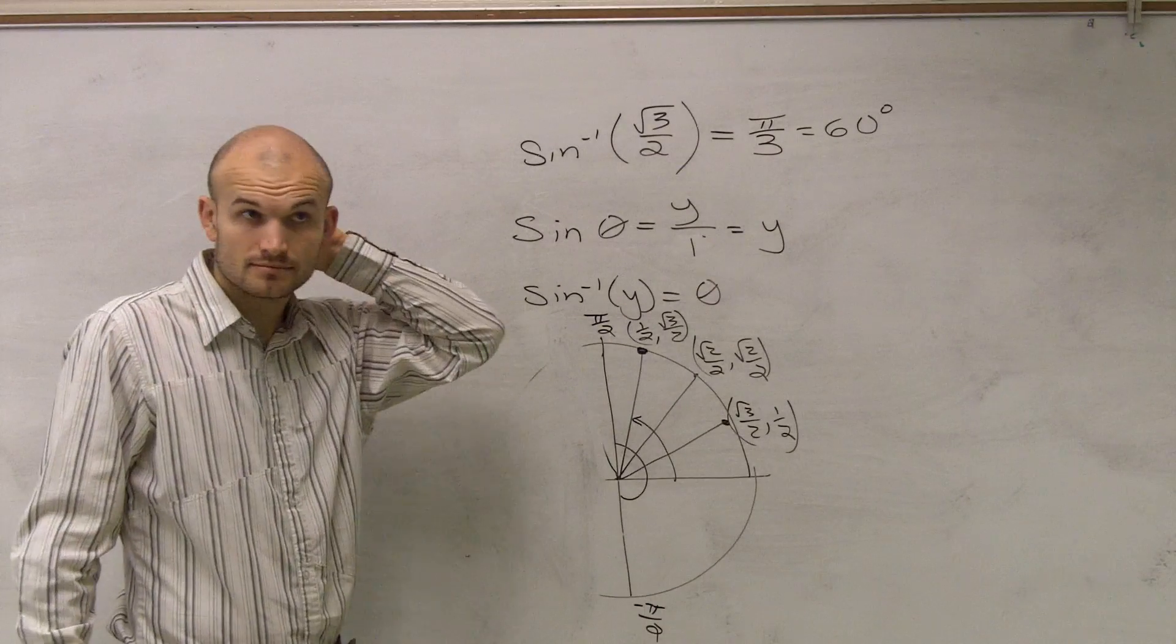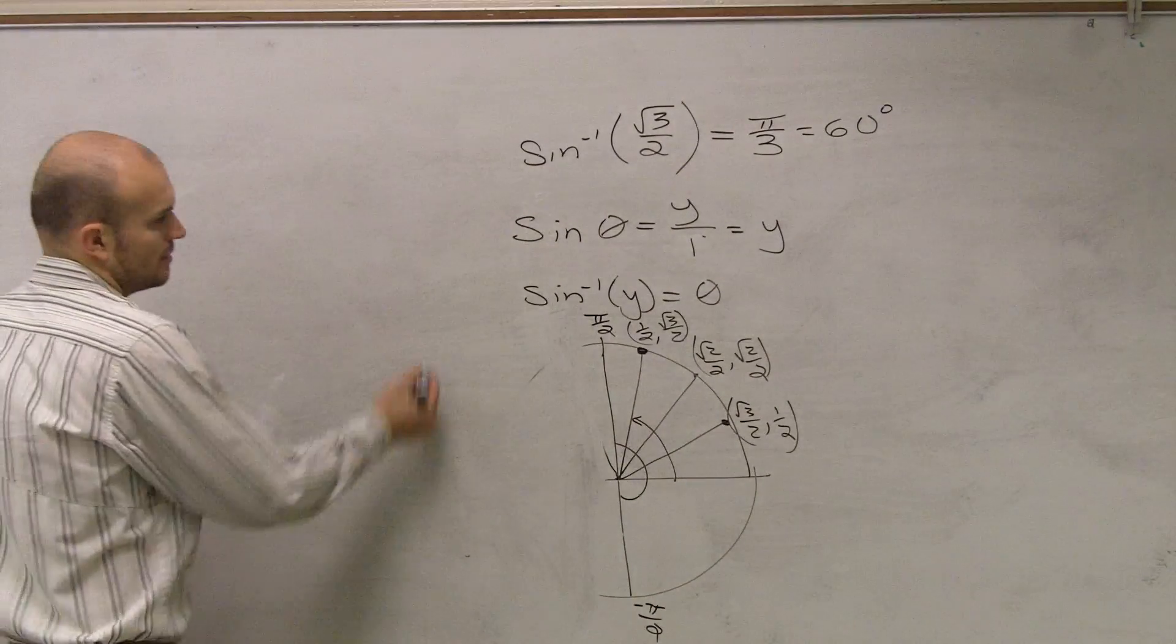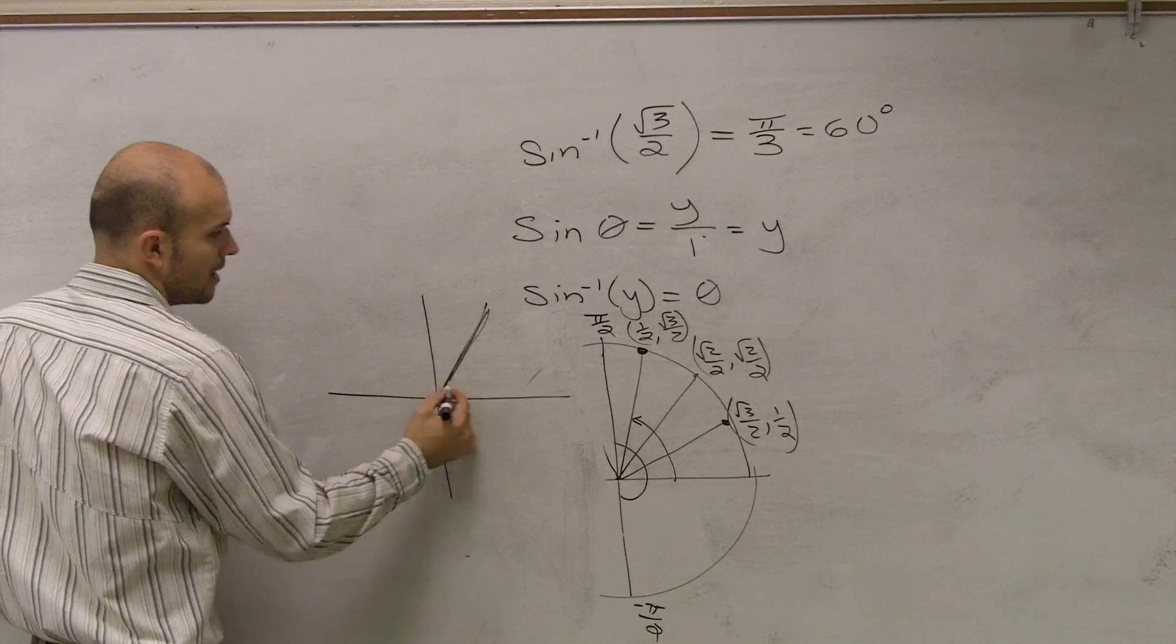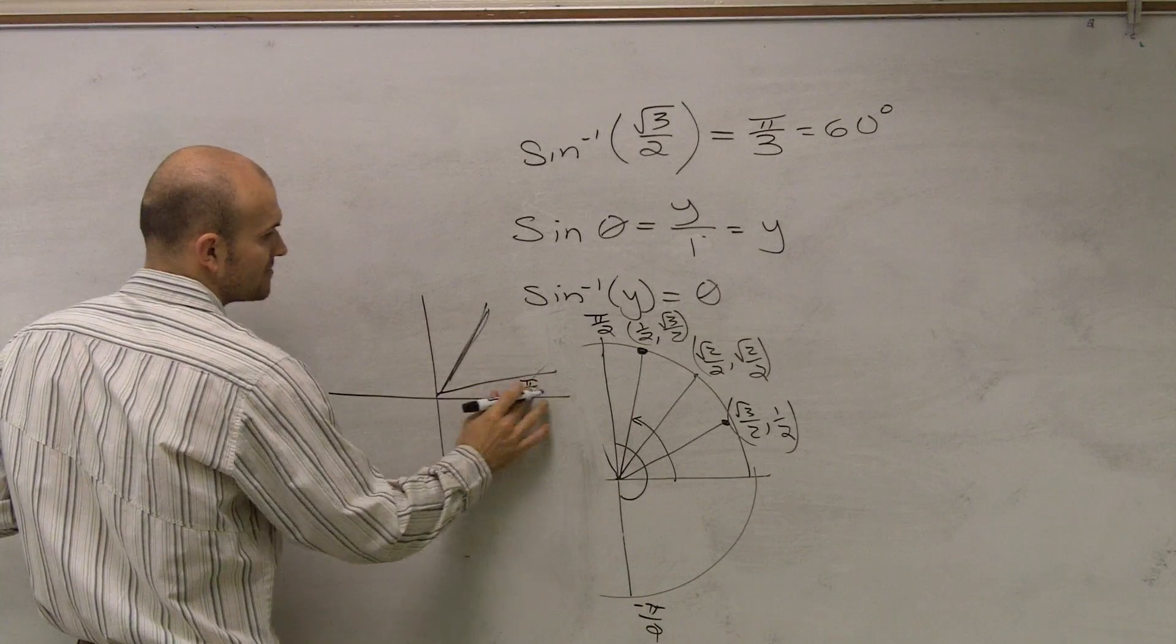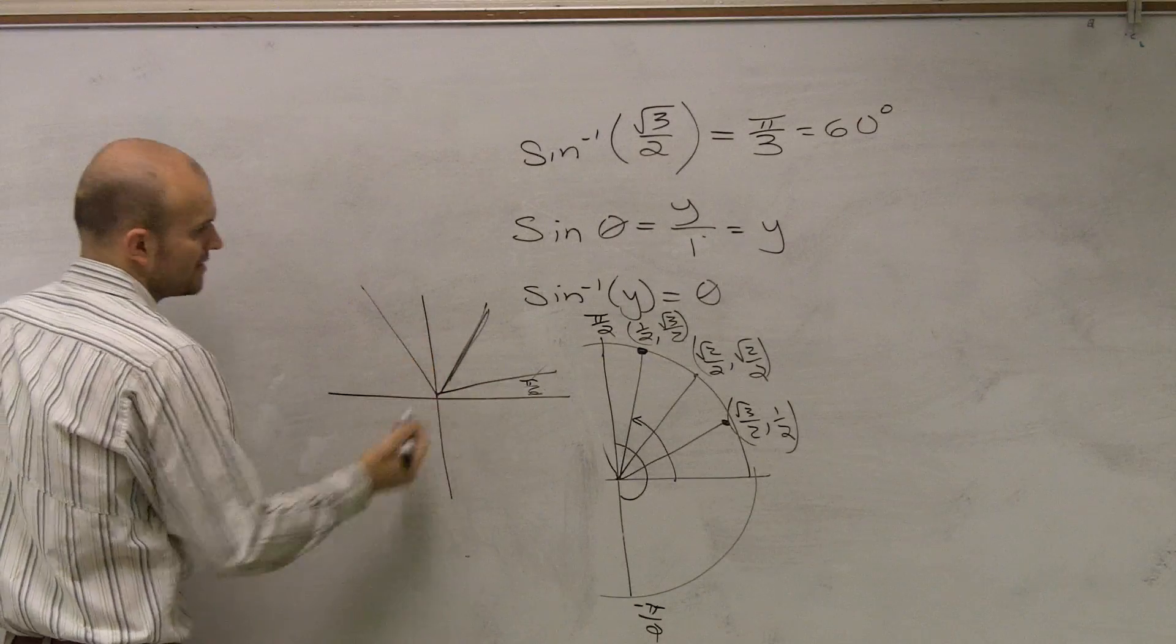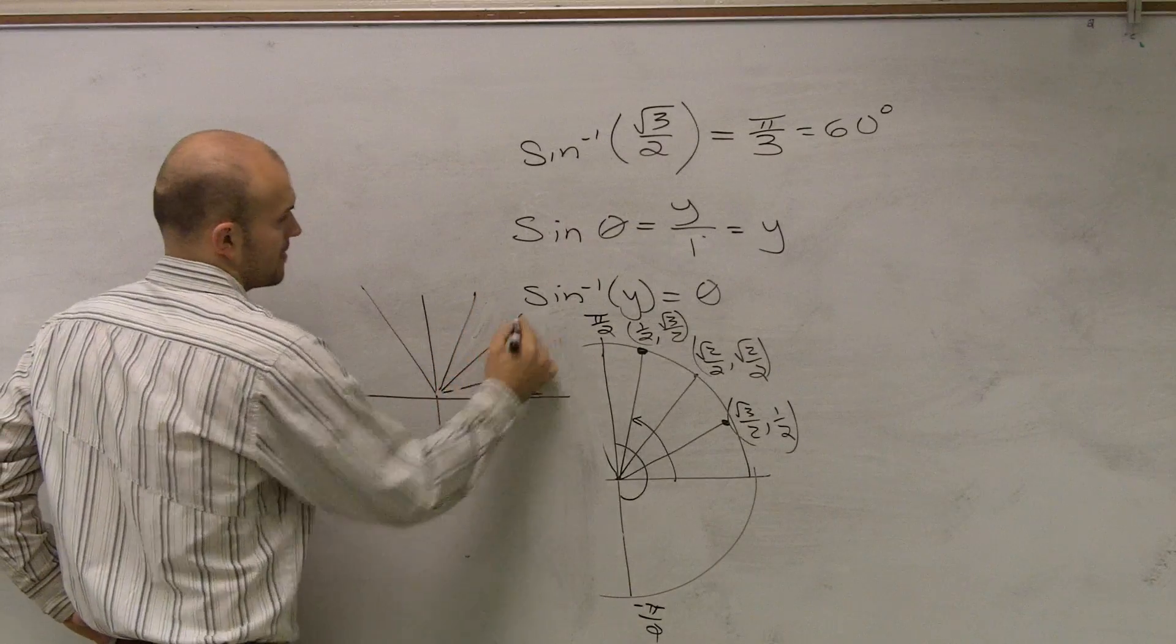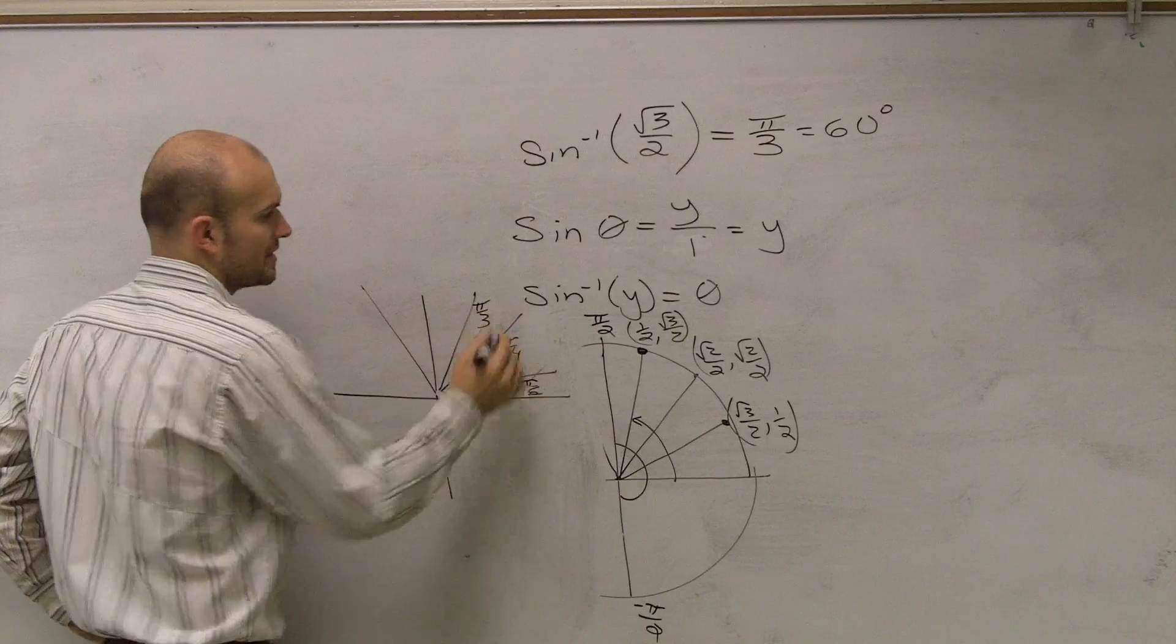How did you get pi over 3? Did you just count? No, remember. I'm sorry, no, remember. This one was angle was pi over 6. I don't know. It's really just kind of memorizing. If you remember, there's three points. Okay? This one was pi over 4. This one was pi over 3.